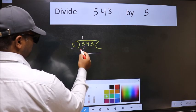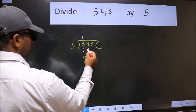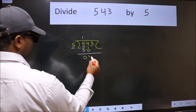Now we should subtract. We get 0. After this, bring down the next number. So 4 down.